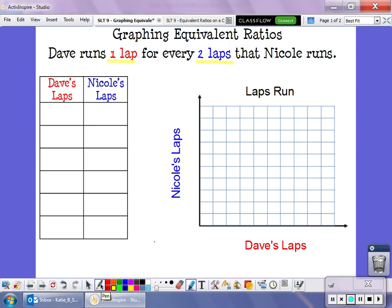So the first thing I want to do is create my table. I know that Dave runs one lap for every two laps that Nicole runs. So for every one that Dave runs, Nicole runs two laps. If I think about the pattern or the relationship I have, remember, ratio tables have a multiplicative relationship.